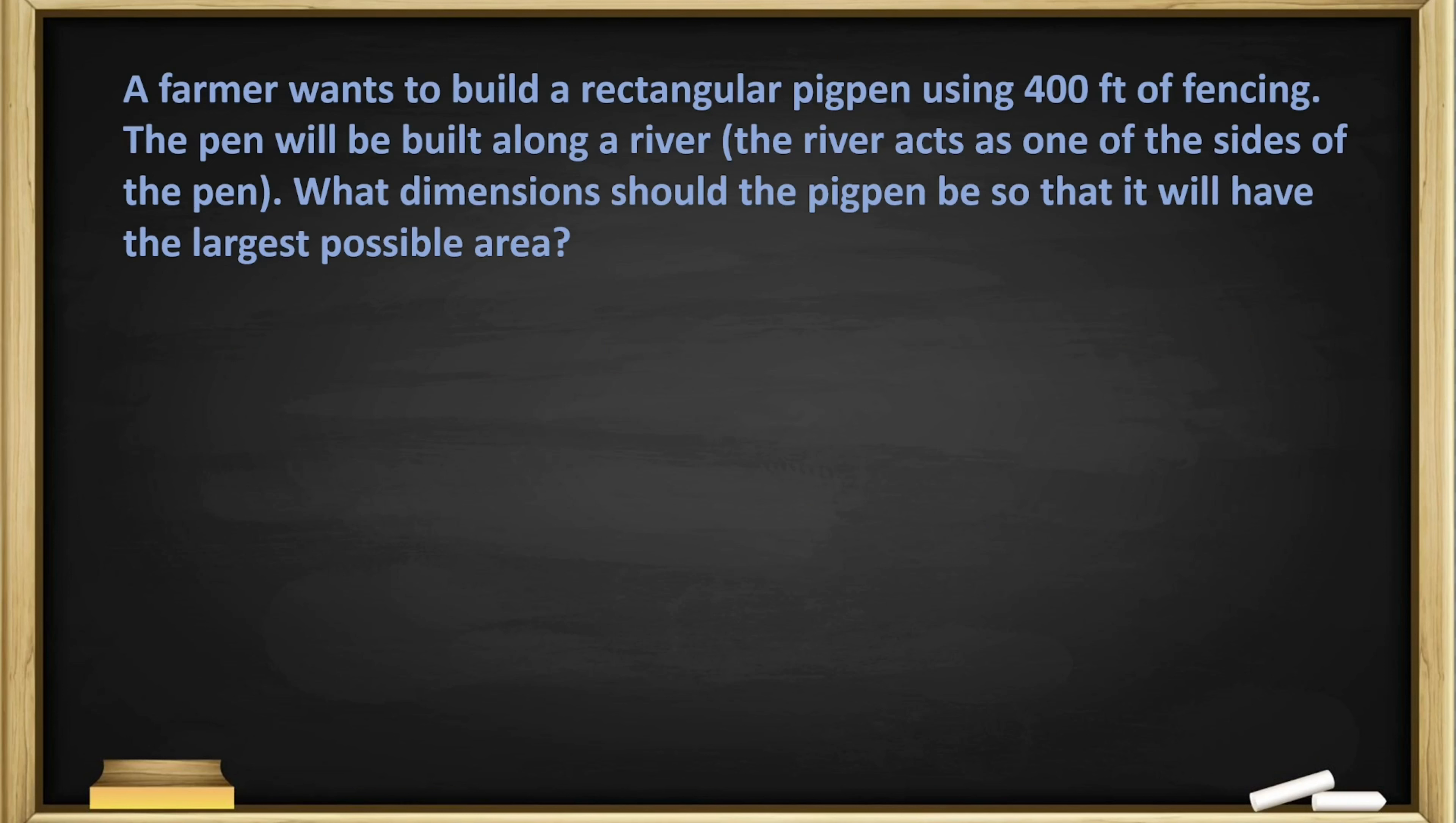Let's take a look at another example. A farmer wants to build a rectangular pig pen using 400 feet of fencing. The pen will be built along a river; the river acts as one of the sides of the pen. What dimensions should the pig pen be so that it will have the largest possible area? The largest possible area tells us right away that we're looking for a maximum. We're looking for area, so our main equation has to be A = lw. We're not a big fan of l's and w's, let's keep it as x and y. So let's set the length as x and the width as y, so our main equation now looks like A = xy.